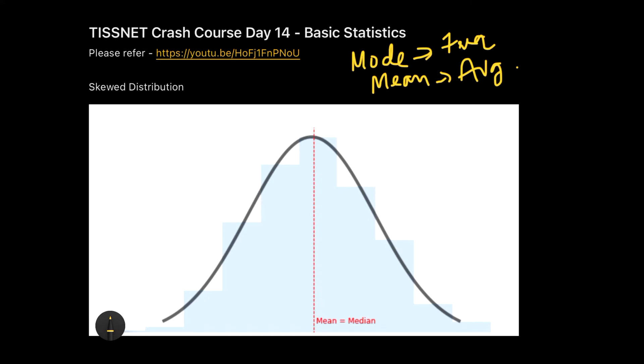And the last thing which we need to know is the median. Median is considered when we are actually arranging the data in the ascending order, starting from the smallest going up to the highest. And then in that ordered data, the number which comes at the middle is called as the median.